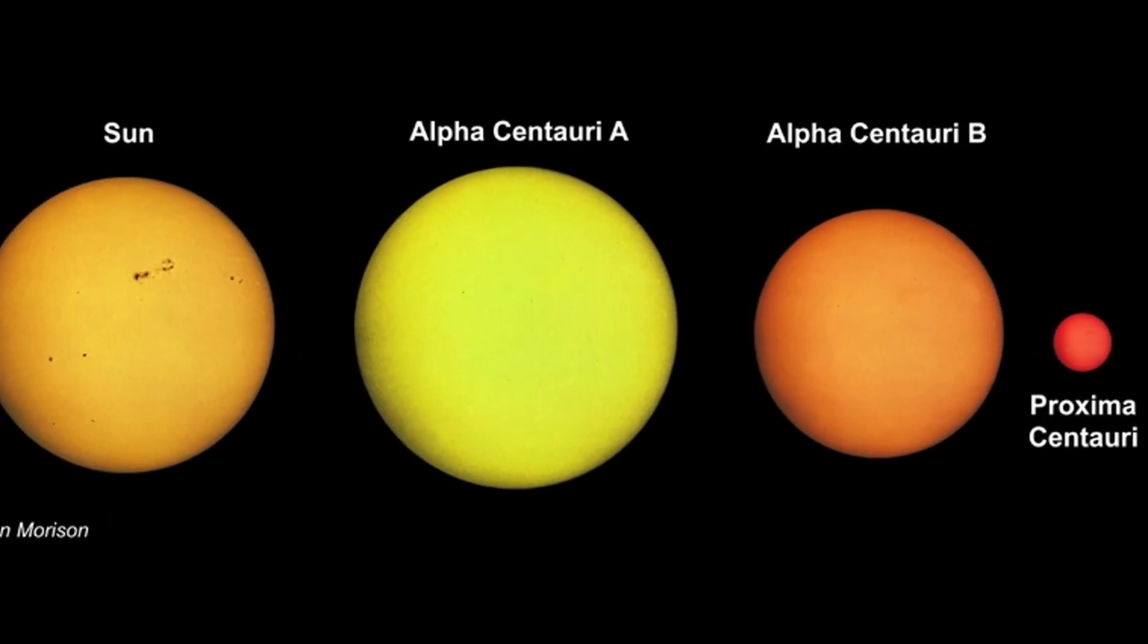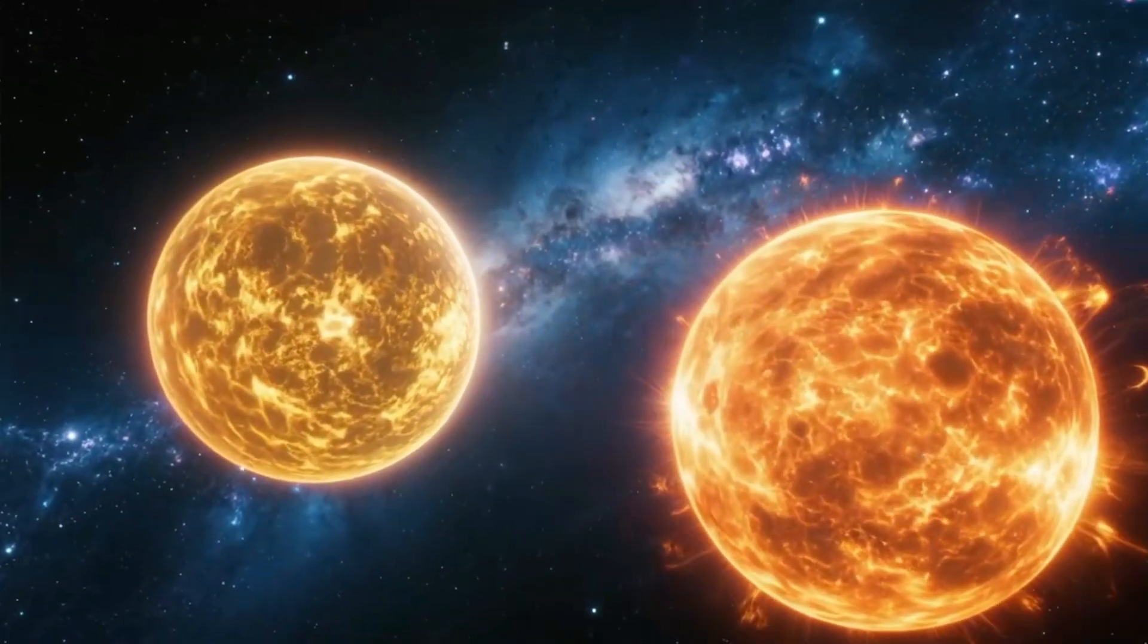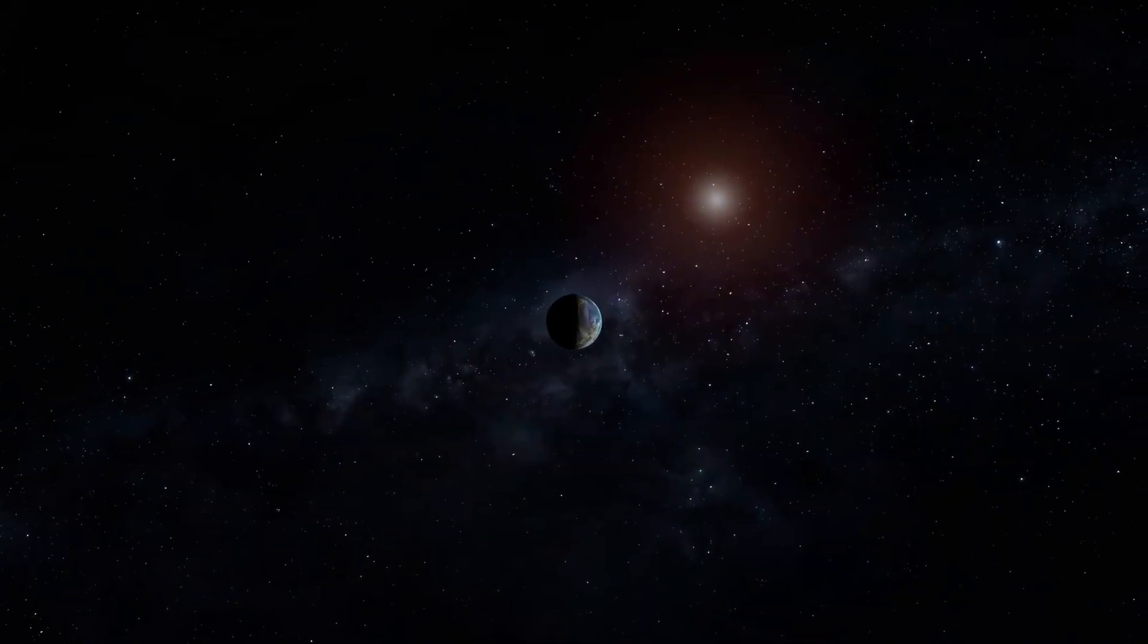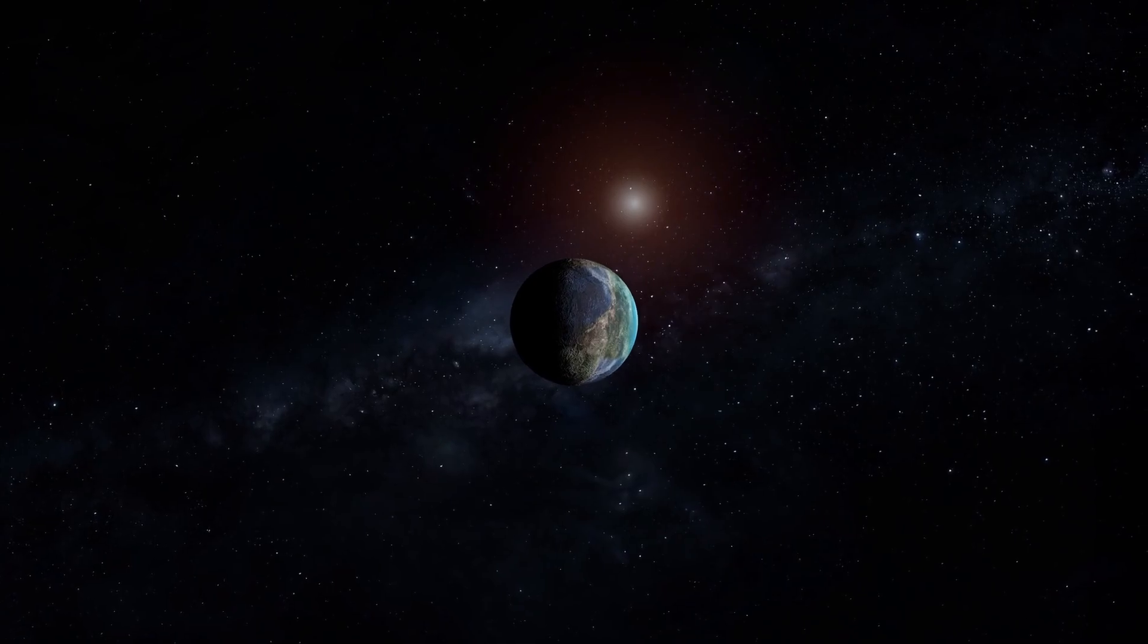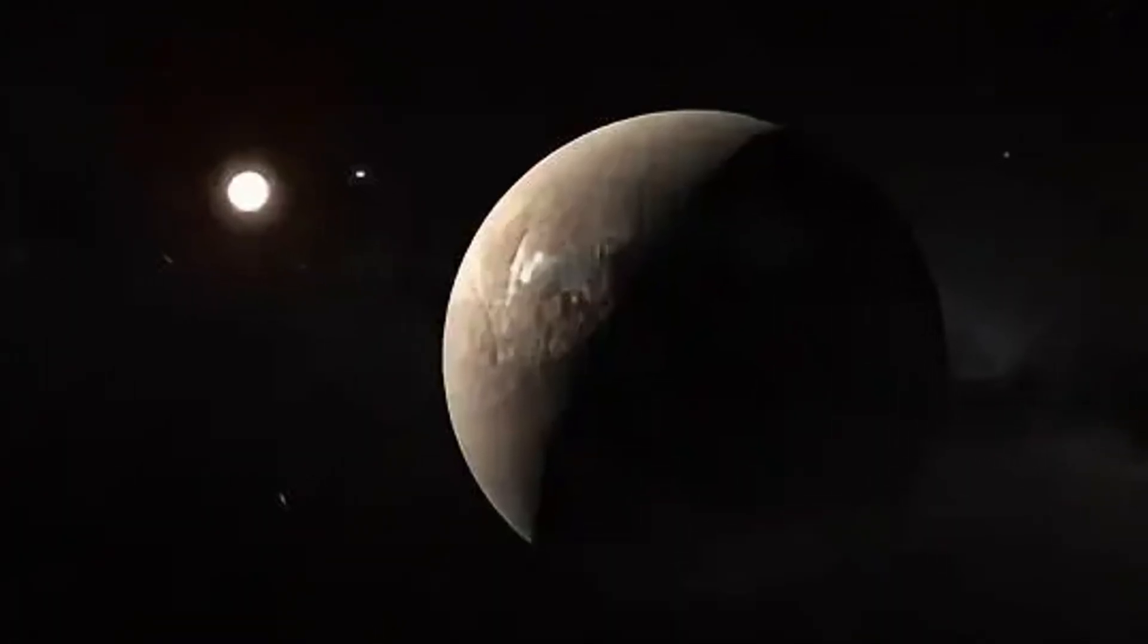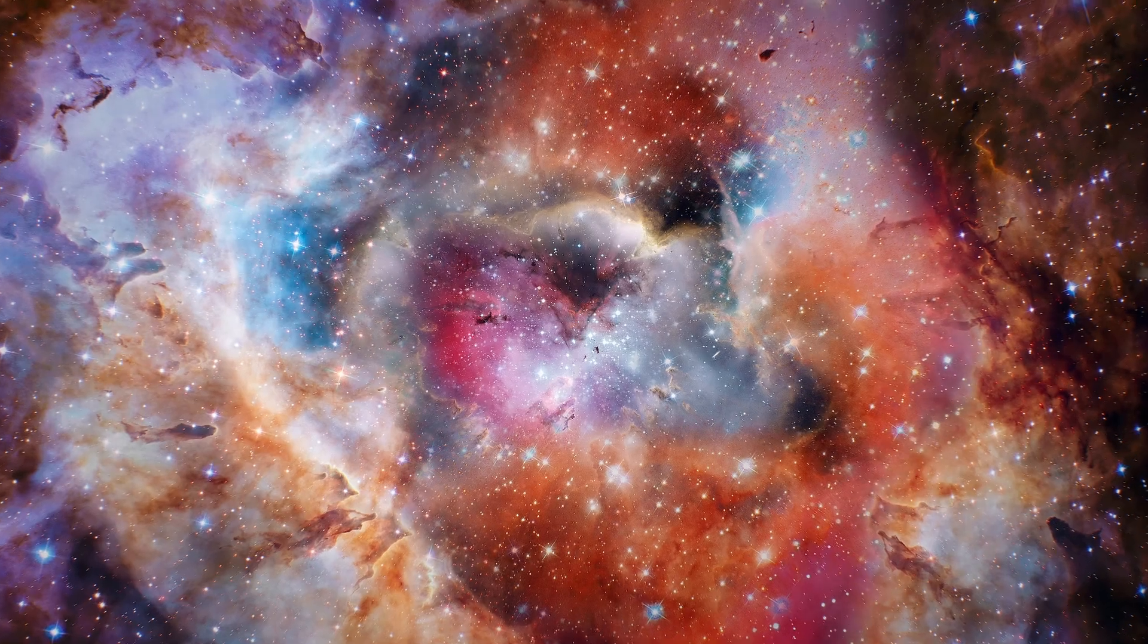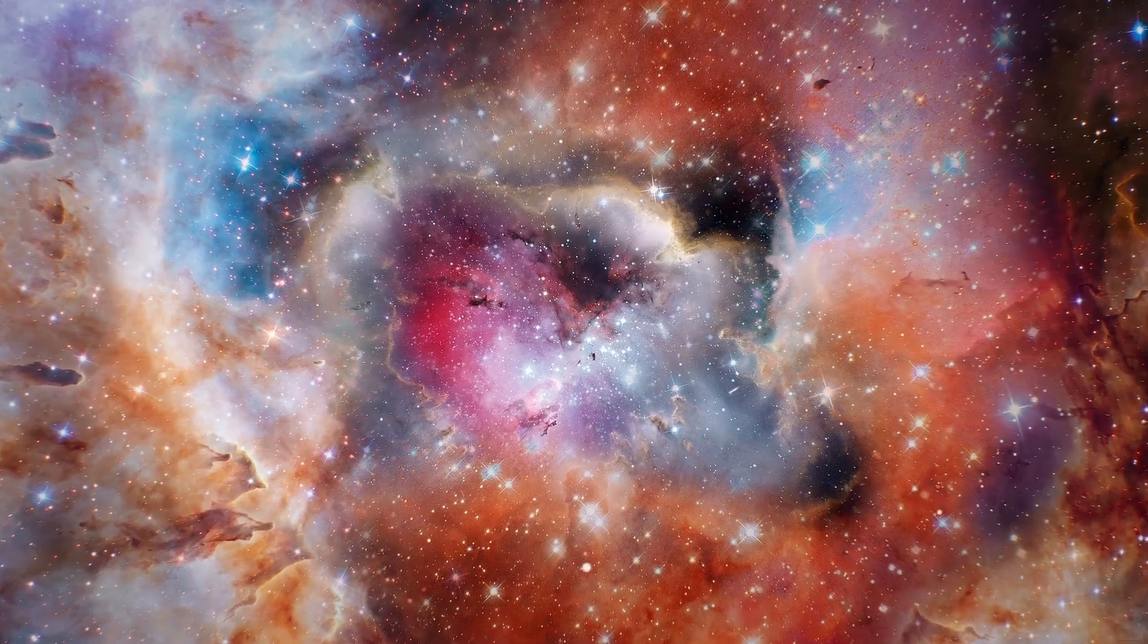Alpha Centauri is a triple system. Alpha Centauri A, B, and Proxima Centauri, the latter being the closest star to the Sun. In 2016, astronomers discovered a planet there, Proxima B. It lies in the star's habitable zone. We don't know if there's life, but we do know it's one of the best targets for a real interstellar mission.